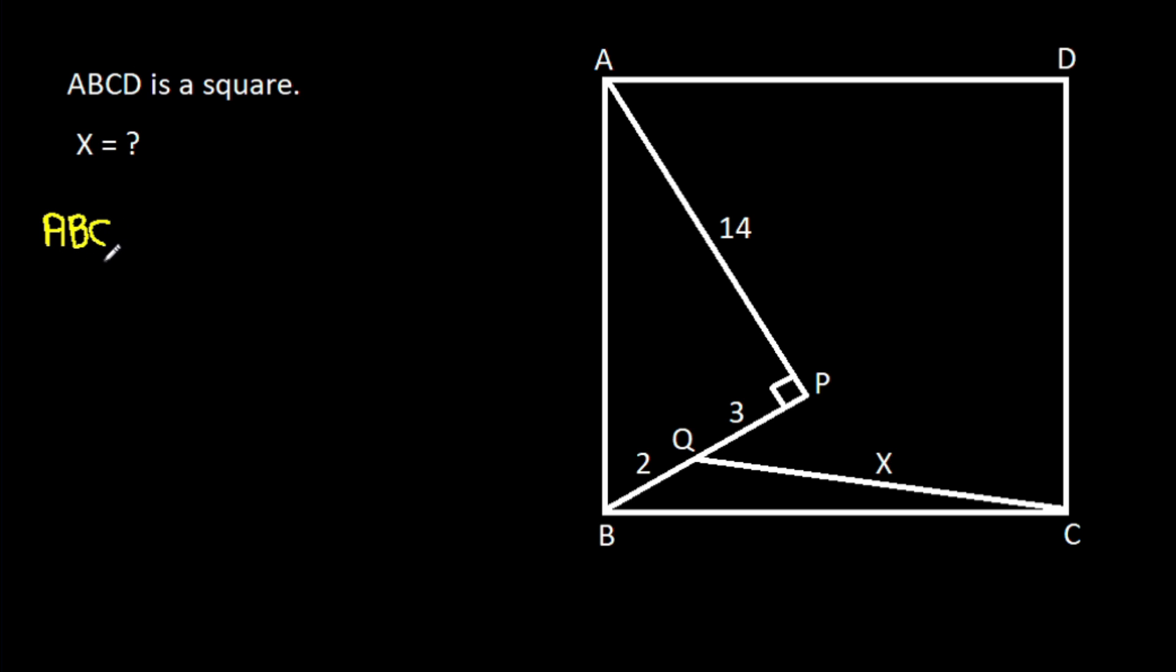So ABCD is a square. That means AB will be equal to BC, and angle ABC will be 90 degrees. This angle will be 90 degrees.